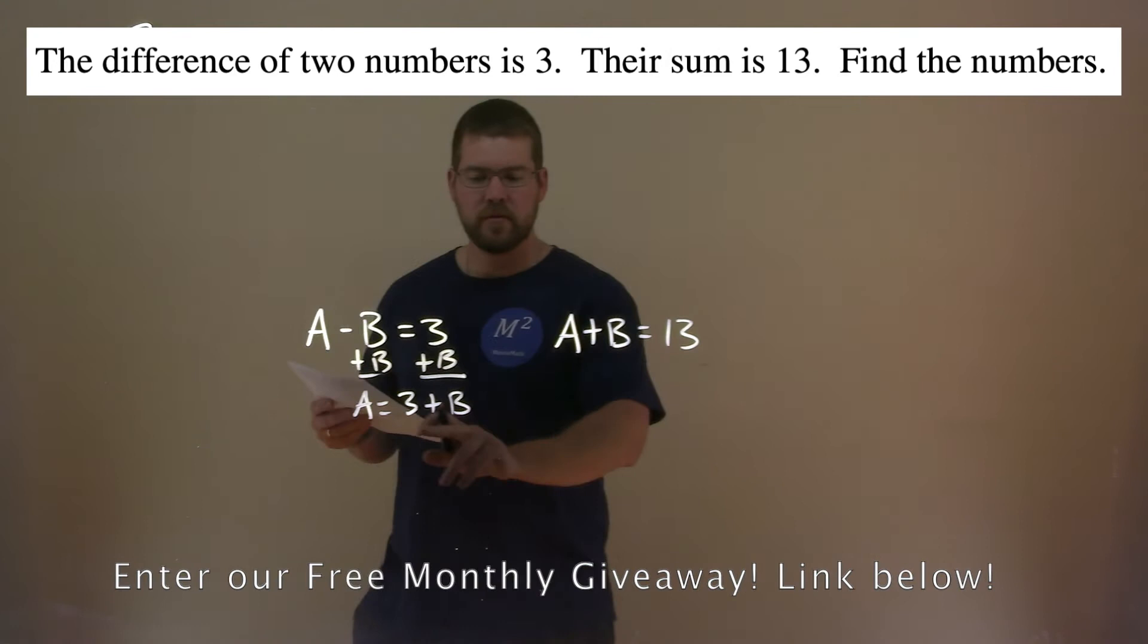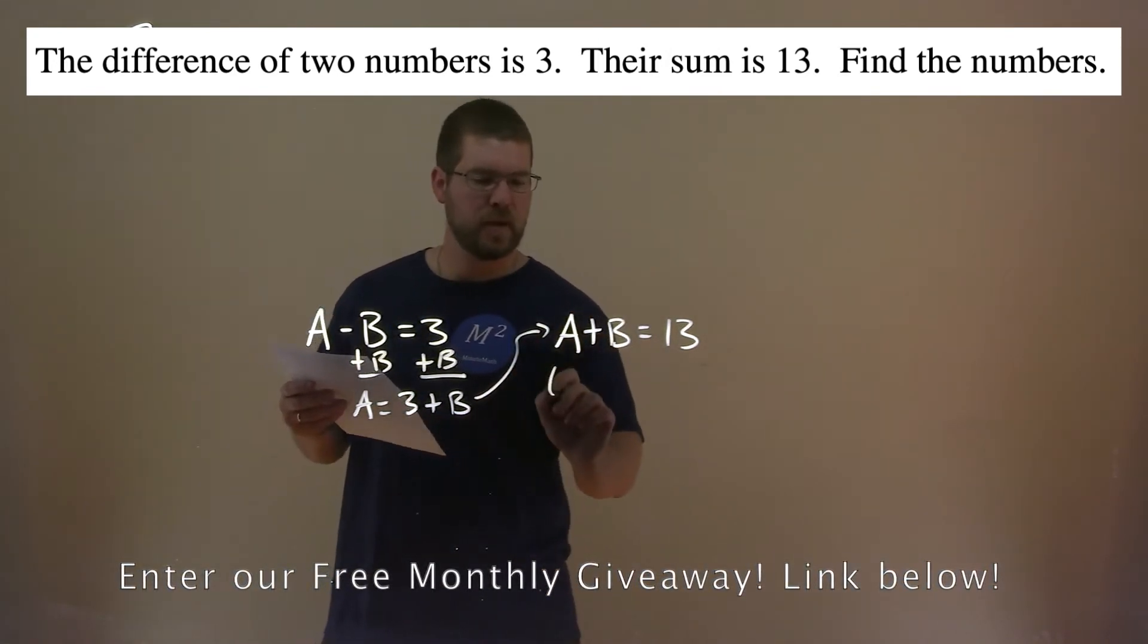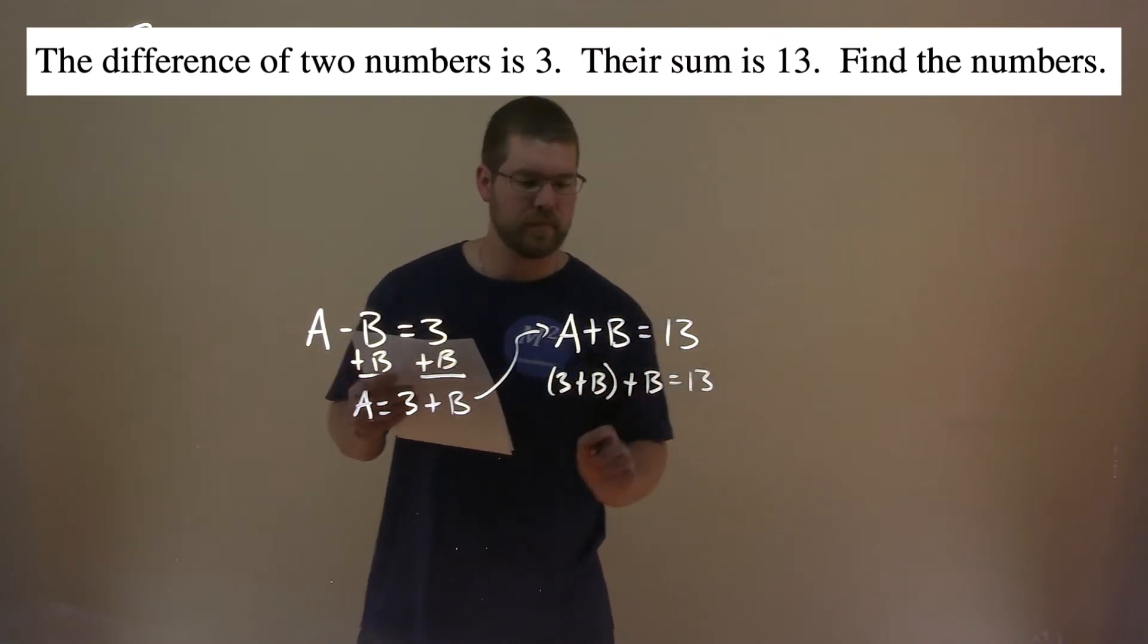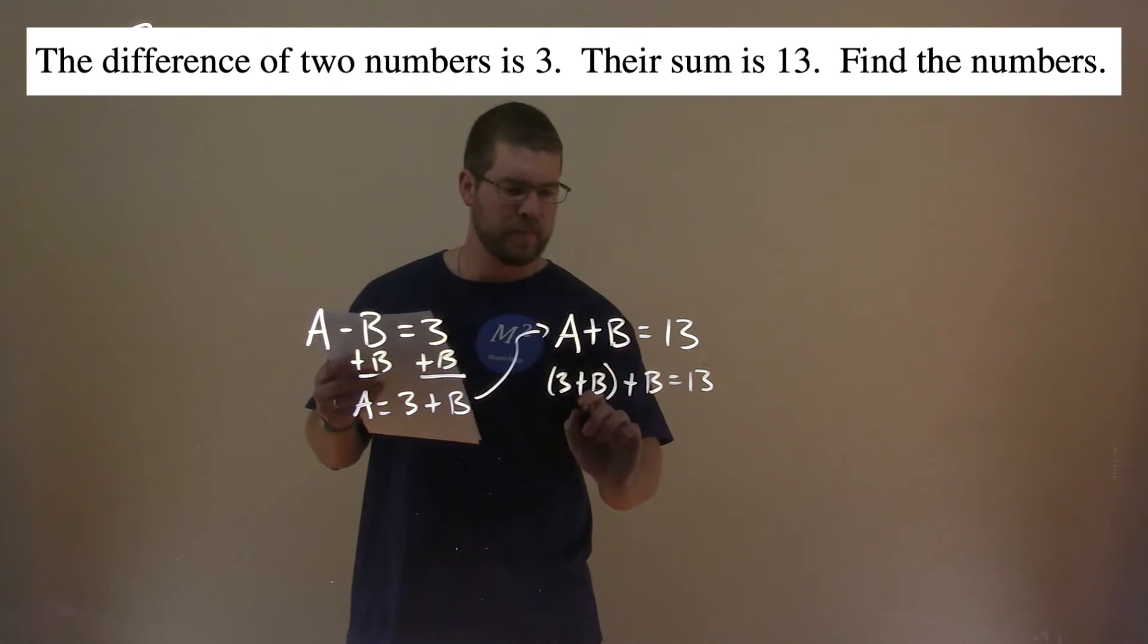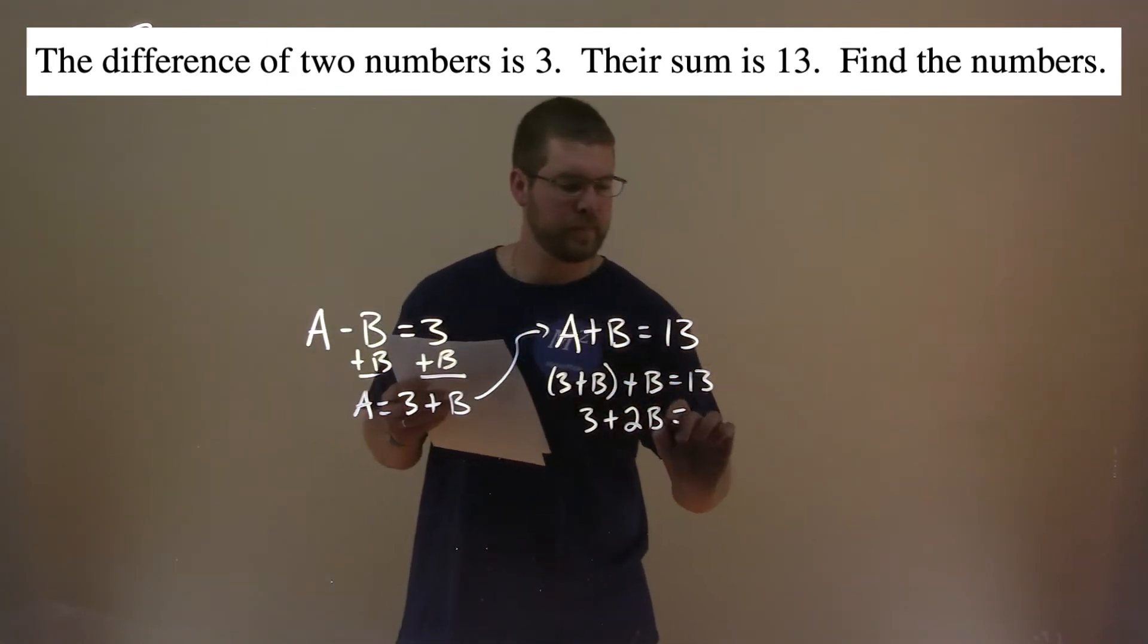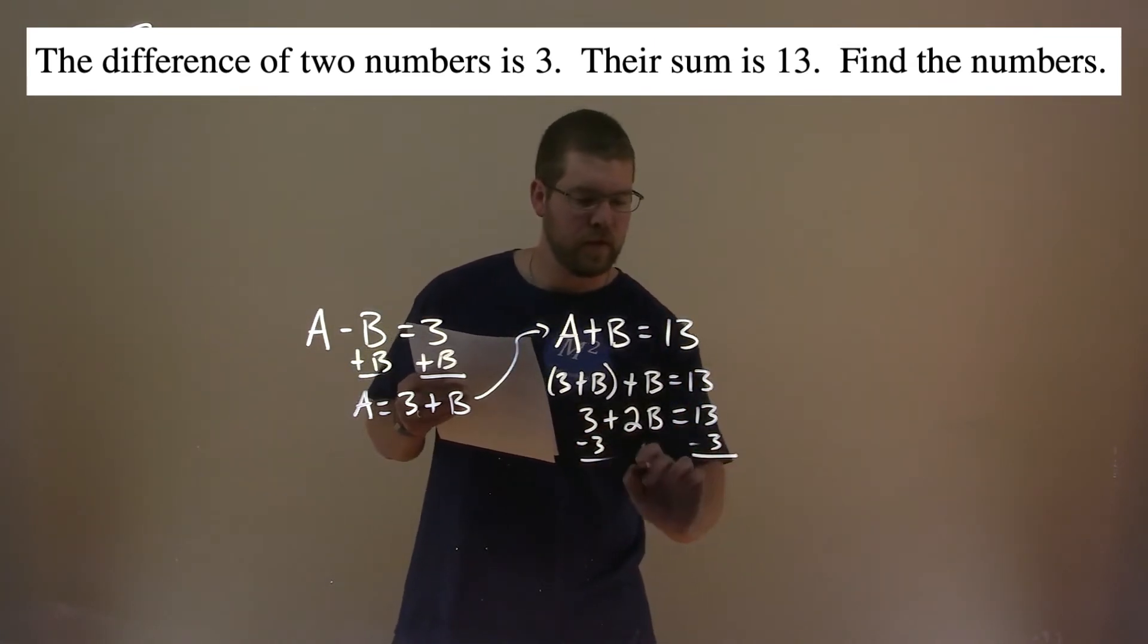With that, we're going to substitute this value for A into that A. 3 plus B plus B equals 13. Keep simplifying. 3 plus 2B—B plus B is 2B—that's 13. Subtract 3 from both sides, and 2B equals 13 minus 3 is 10.